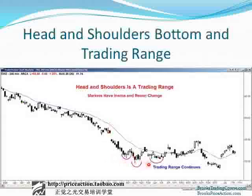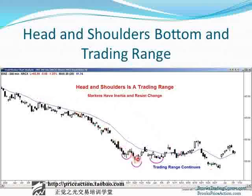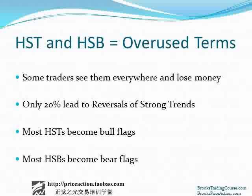Here's a head and shoulders bottom, and most head and shoulders bottoms do not reverse the trend — this is a perfect example. It led to a trading range and then another low. Markets tend to have inertia and they resist change, so in a strong bear trend it's going to be resistant to change. This head and shoulders bottom was simply part of a large trading range. Head and shoulders top and bottom are way overused terms. Some traders see them everywhere and trade them all the time, and if they do, they lose money. Remember, only 20% of reversal patterns actually lead to reversals. Most head and shoulders tops become bull flags; most head and shoulders bottoms become bear flags.